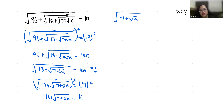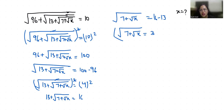So root x equals 9 minus 7. So root x equals 2. Now if I do squaring both sides again, the square root removes.